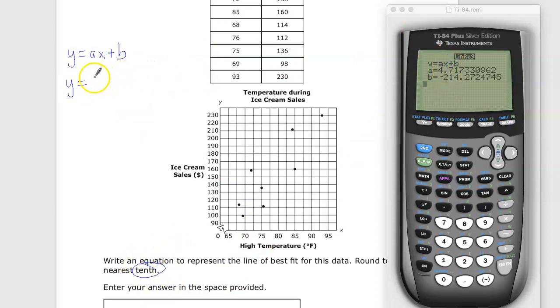Y is equal to, and they want this rounded to the nearest tenth, by the way. So 4.7 would be the a, x. And then this is negative 214.3, so you need to put minus 214.3.